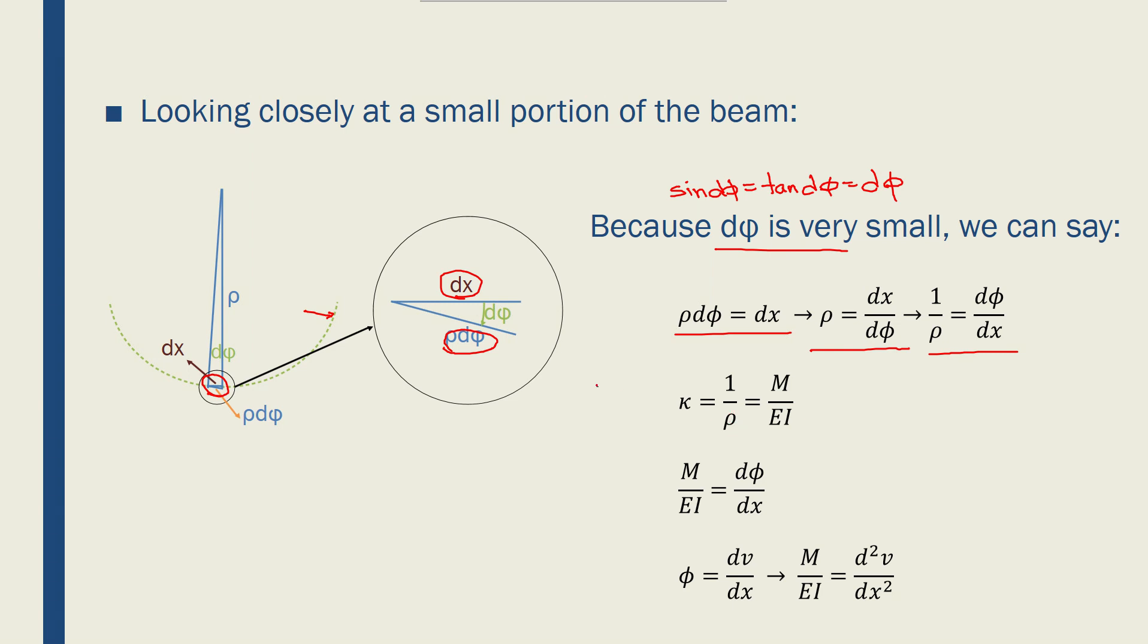1 over rho is what we call curvature of a beam, so this is called curvature and is also equal to M over EI. M is the moment, E is the Young's modulus, and I is the second moment of inertia. And so what they will give us is this equation: M over EI from here is equal to d phi over dx from there, because they're both equal to 1 over rho.